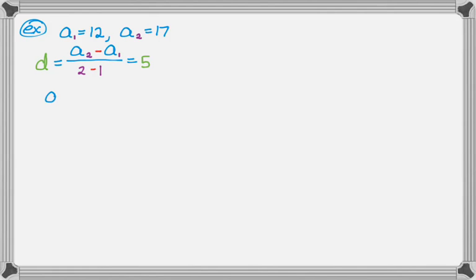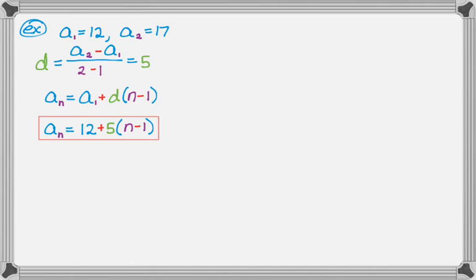And since I know the first term, I'm just going to jump in and write a sub n is equal to, so it should be the first term, plus d times the quantity n minus 1. So a sub n is 12 plus 5, the quantity n minus 1. And that's it.